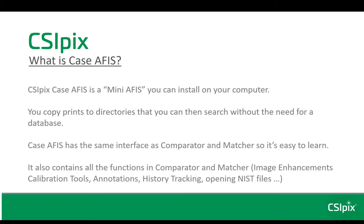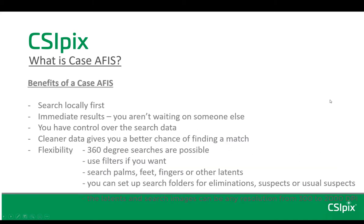It also contains all the functions that are in Comparator and Matcher. Some of the benefits of Case APHIS include that you can search locally first and get immediate results. You have control over the search data. Cleaner data gives you a better chance of finding a match. It's very flexible, and you can search 360 degrees.